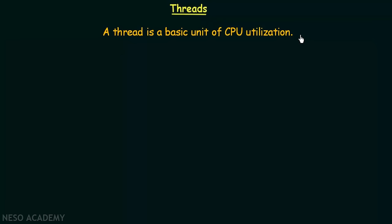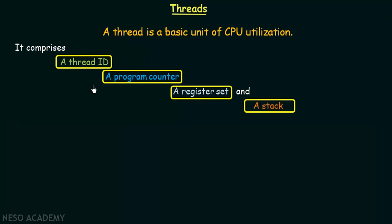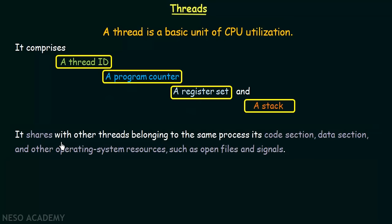Now let us see what comprises a thread. A thread comprises of a thread ID, a program counter, a register set, and a stack. So each thread comprises of these four unique items. Apart from this, it shares with other threads belonging to the same process its code section, data section, and other operating system resources such as open files and signals.